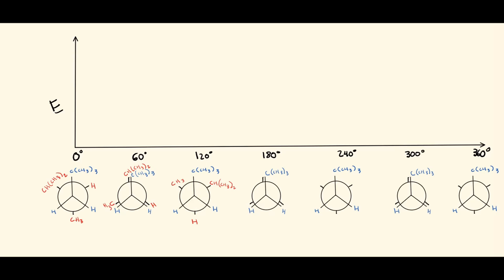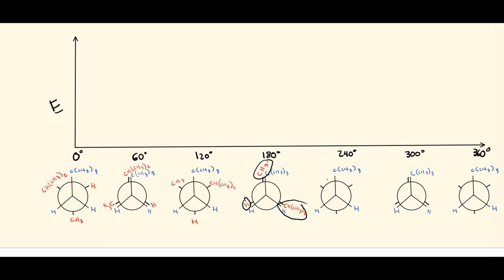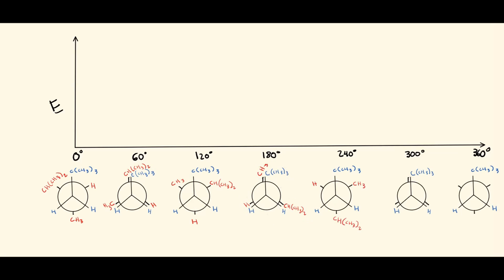The next eclipsed version at 180 degrees has the isopropyl group, the hydrogen, and the methyl group in their new eclipsed positions. Moving another 60 degrees gives us the staggered conformer at 240 degrees, with the isopropyl group, methyl group, and hydrogen in their new staggered positions.